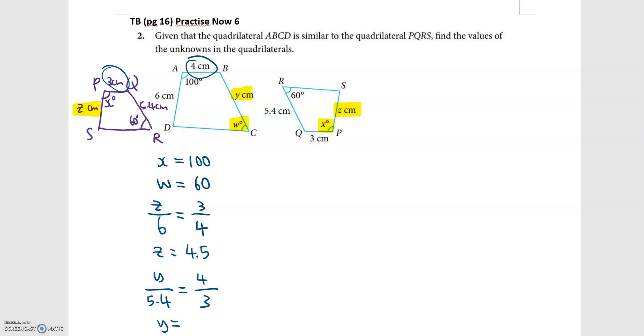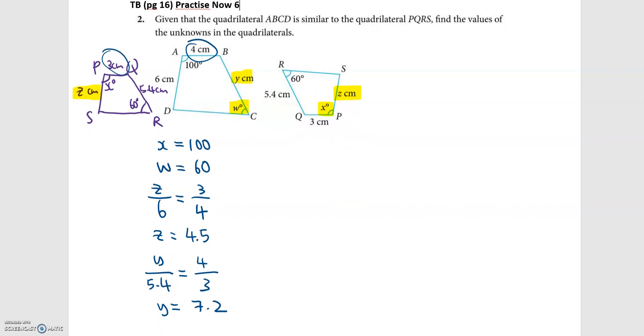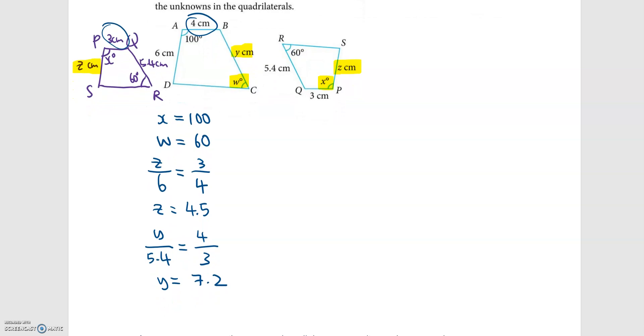Times 5.4, which gives me 7.2. So I have all the values of the unknowns now. So I will just write it in. Therefore, x is 100, w is 60, y is 7.2, z is 4.5. So this is my answer for question 2.